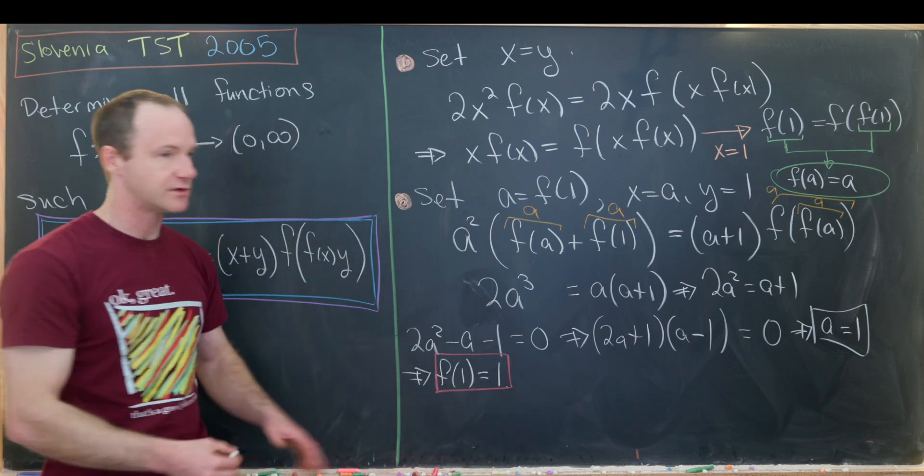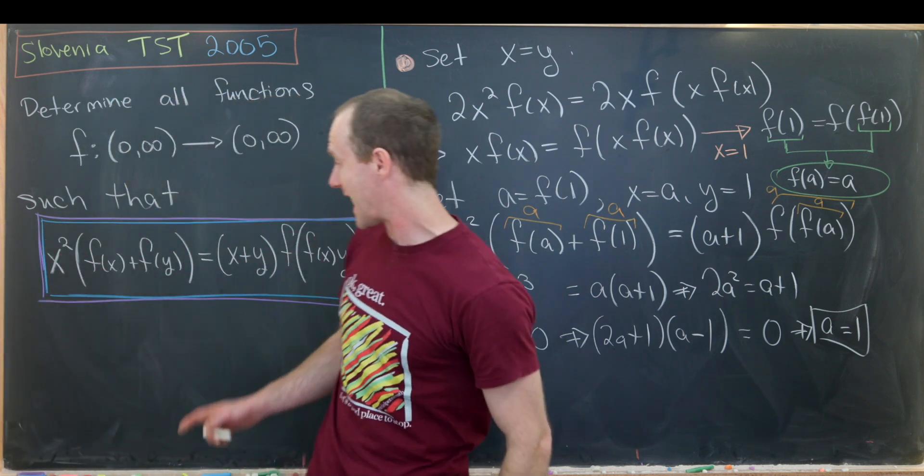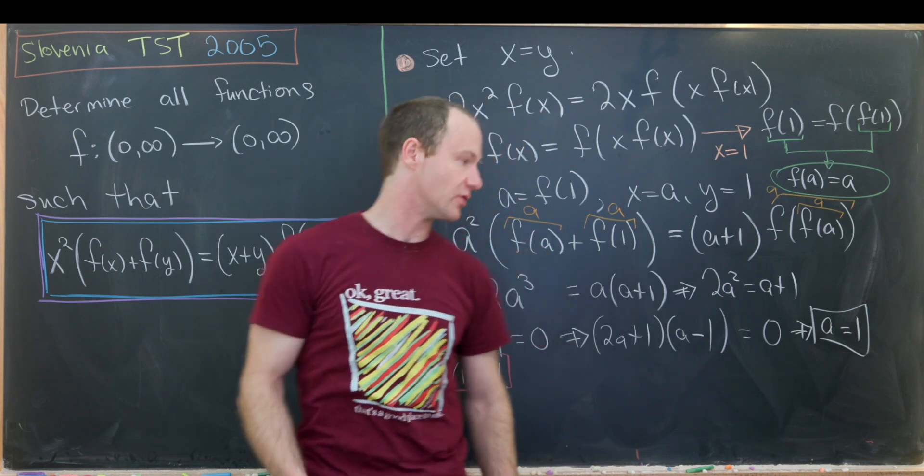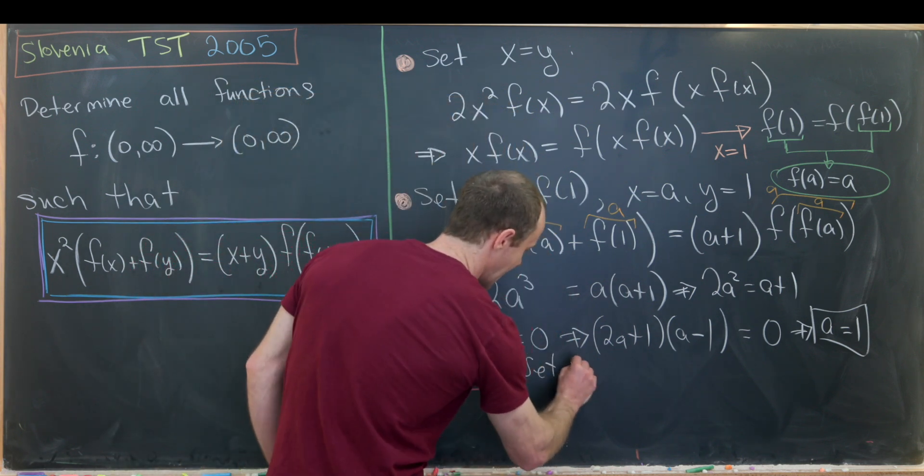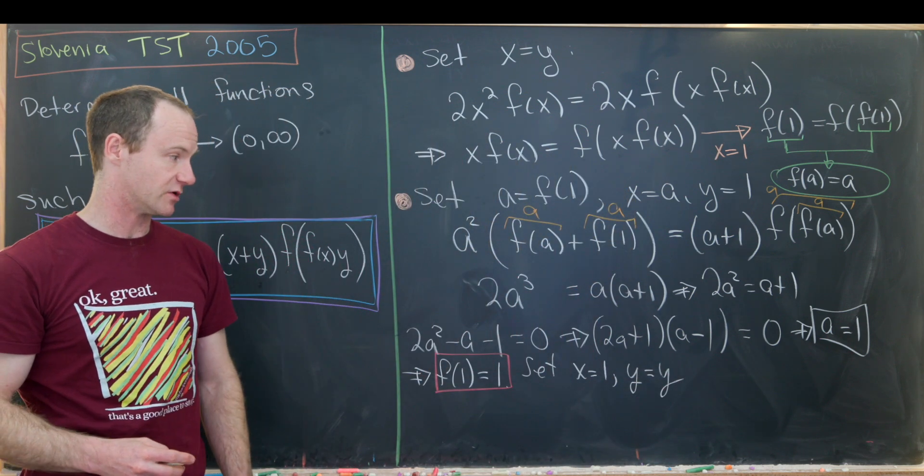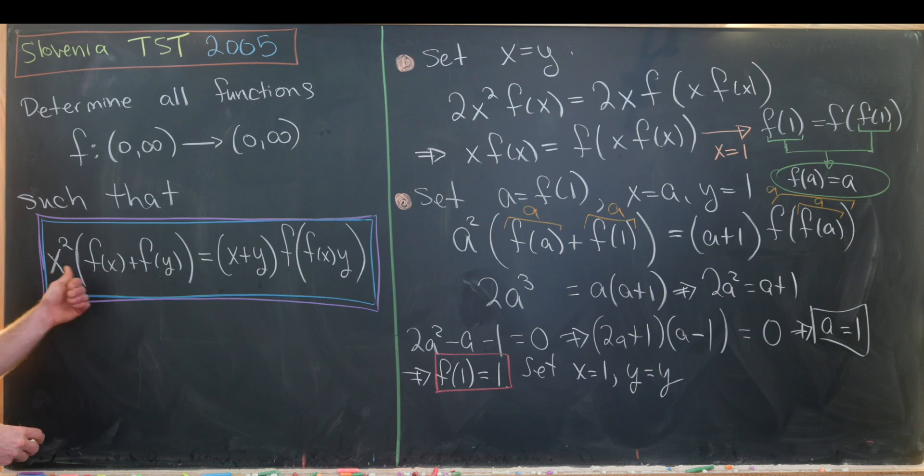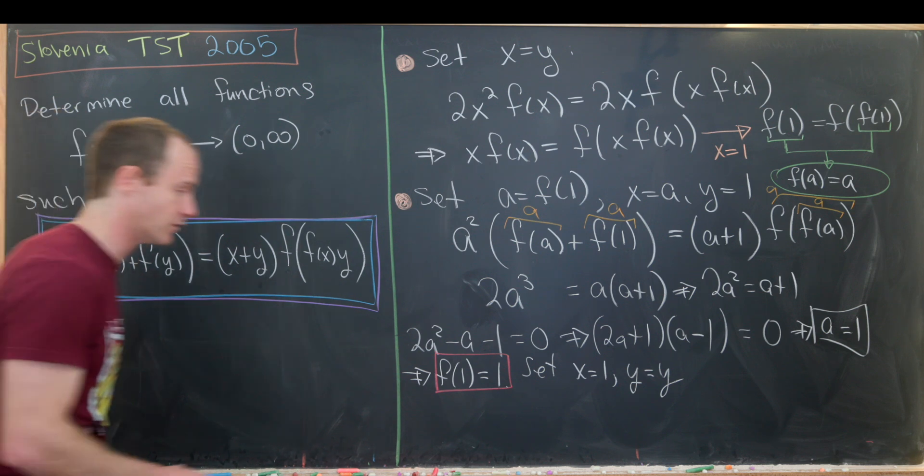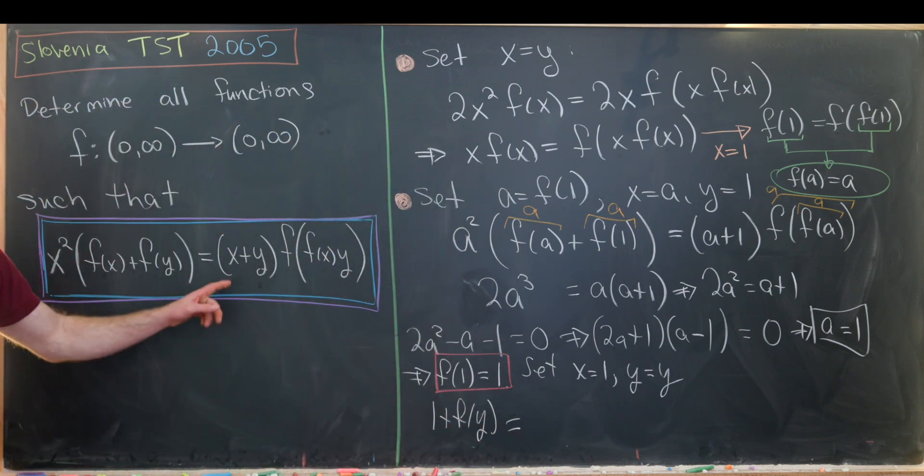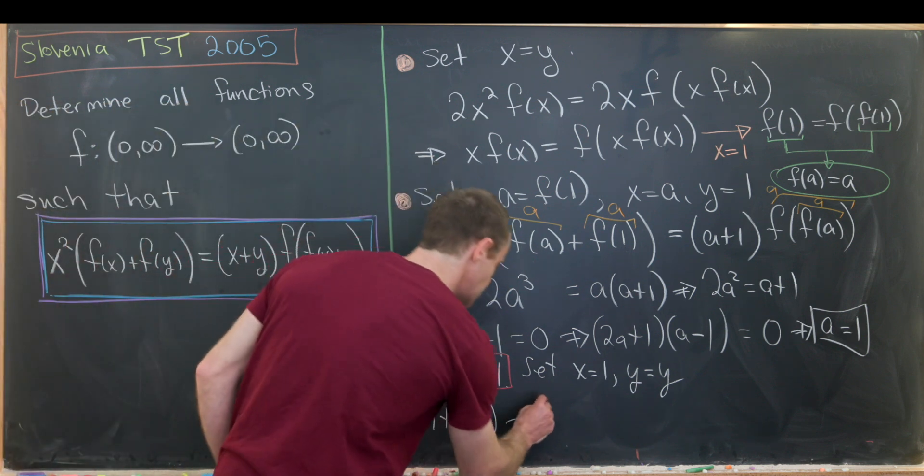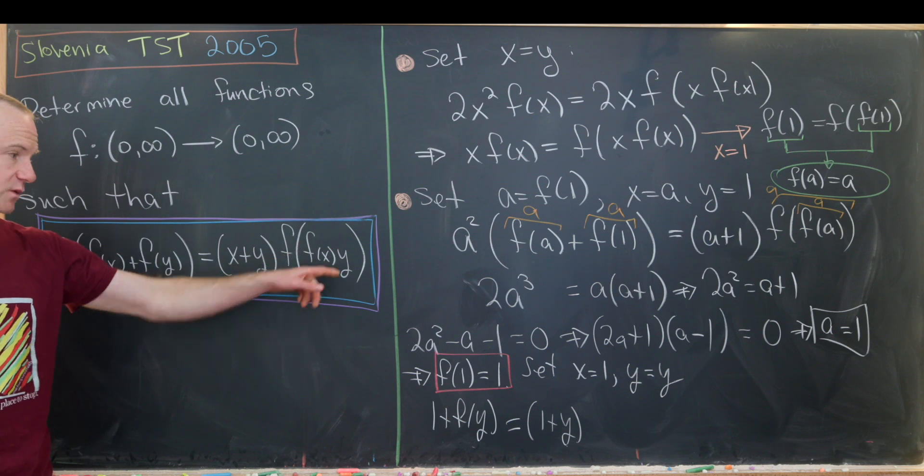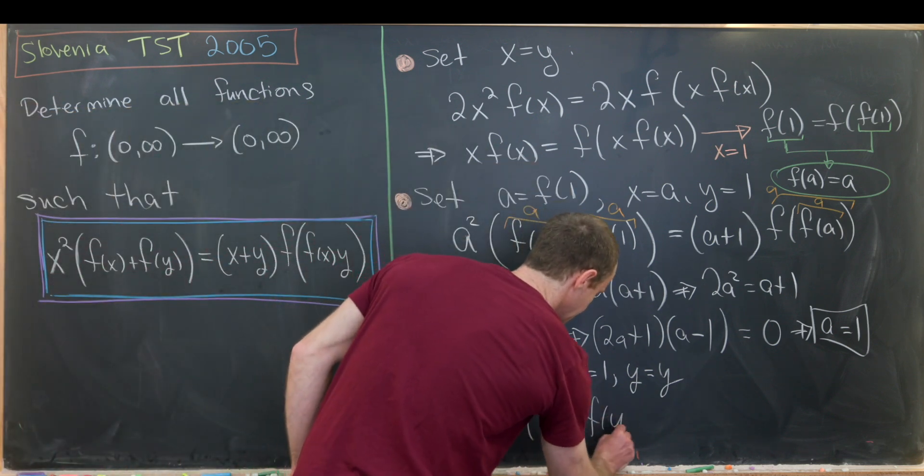And that gives us a lot of information. So now what we'll do is plug in one back into this equation for one of the variables and leave the other variable just as a variable. So I'll say we'll set x equal to one and I'll let y be equal to y, so it's a free variable. We'll have 1² here and then we'll have f(1), which is equal to one plus f(y). So this will be 1 + f(y) on the left-hand side. And over here we'll have 1 + y, so (1+y) times f evaluated at f(1), which is one times y, so that's f(y).